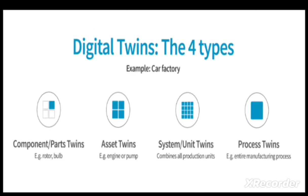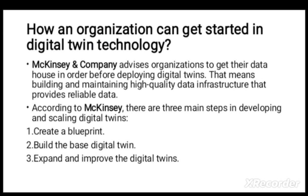Here is the diagrammatic representation of the four basic types of digital twins: component twins, asset twins, system twins, and process twins. McKinsey and Company advise organizations to gather their data infrastructure before deploying digital twins — building and maintaining high-quality data that provides reliable information. According to McKinsey, there are three main steps to developing and scaling digital twins.